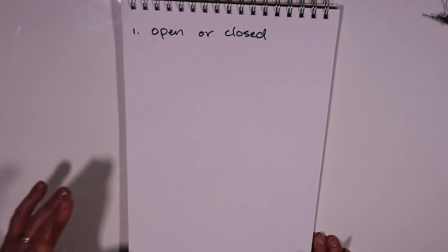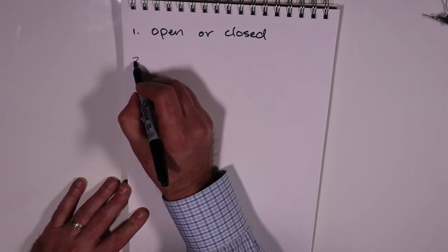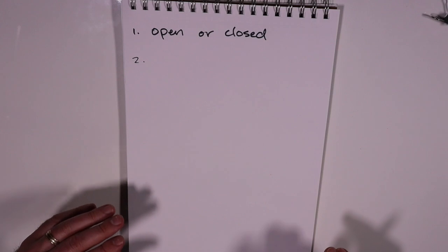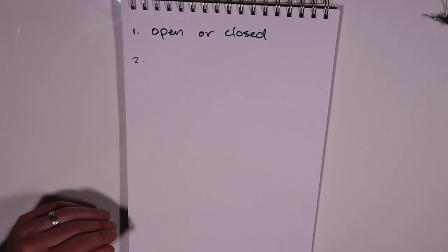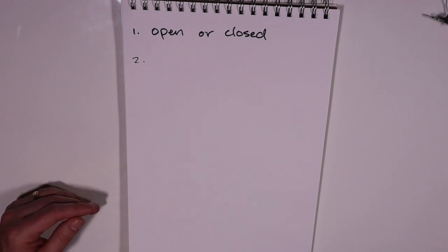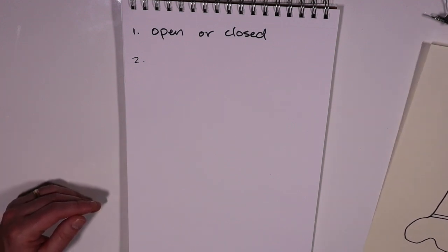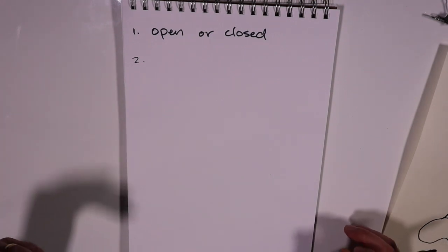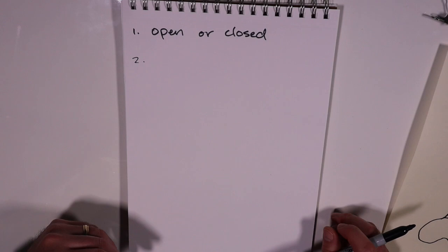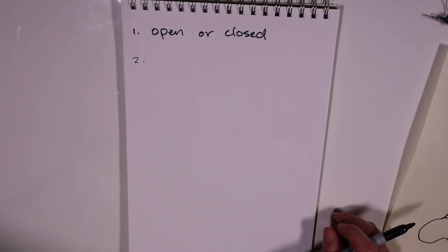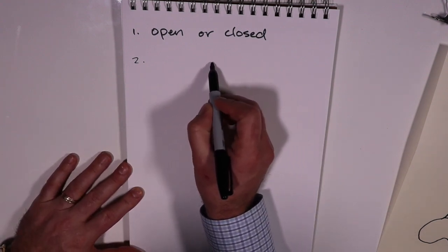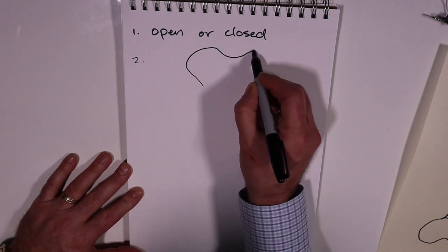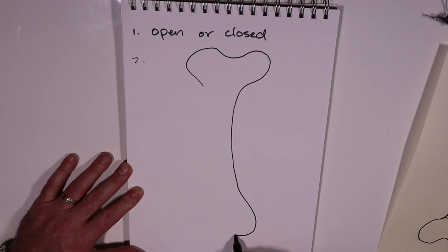All right, so open or closed is the first step. Step number two: you want to note where on the bone the fracture is located. And that is in four different potential locations for pediatric patients or skeletally immature patients, and three for skeletally mature. Let's draw a little diagram for that. So let's draw our stereotypical long bone.